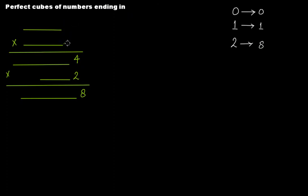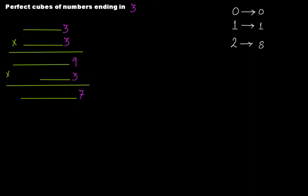What if your number ends in 3? You multiply: 3 times 3 is 9 at the units place. Then 3 times 9 is 27 — so 7 comes at the units place and 2 is carried over. It means that if your number ends in 3, the perfect cube ends in 7.